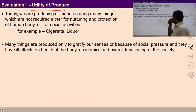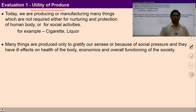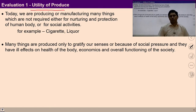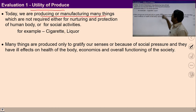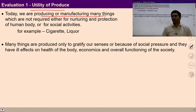First, we will evaluate the system in the context of utility of produce — whatever is being produced in the prevalent society. Today we are producing or manufacturing many things, many such things which are actually not required either for nurturing or protection. If we recall the previous lecture, we studied the goal of production.